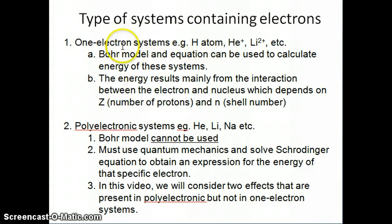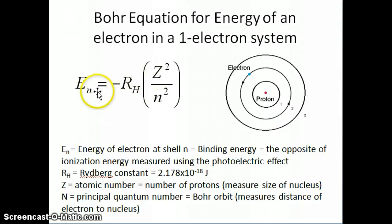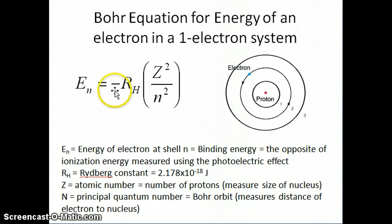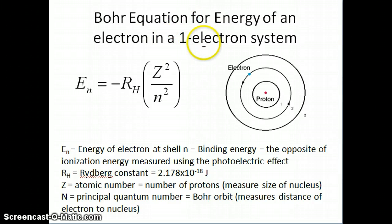But if you want to apply the Bohr model and the Bohr equation to the other ions that have only one electron, we basically have to modify the equation of the Bohr model so that it looks like this. This equation was presented as a way to calculate the energy of an electron in a one-electron system.